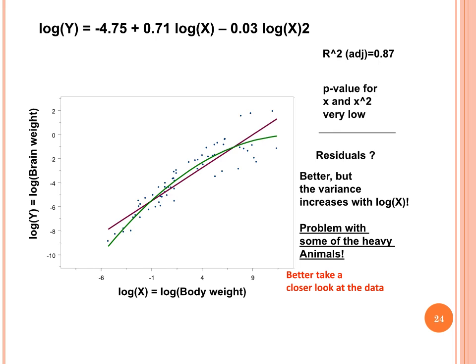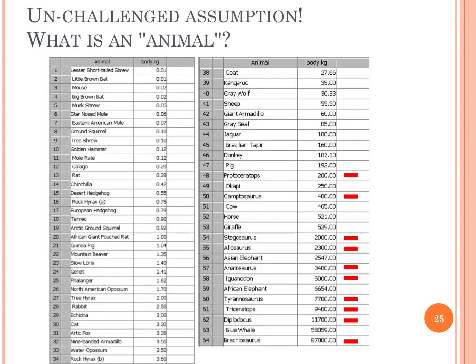Many have a brain weight considerably smaller than predicted by the model. This is not in line with our assumptions, so we better take a closer look at the data. And here it is — dinosaurs were dumb. More seriously, the animal list contained extinct species. We had made the assumption that we were looking at extant, contemporary species only. We had an unchallenged assumption, which would have affected our model, especially for the heavyweight animals, certainly influencing our analysis outcome.